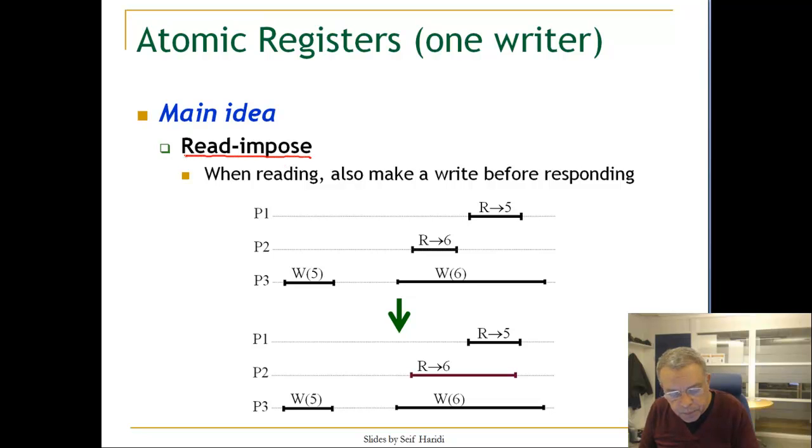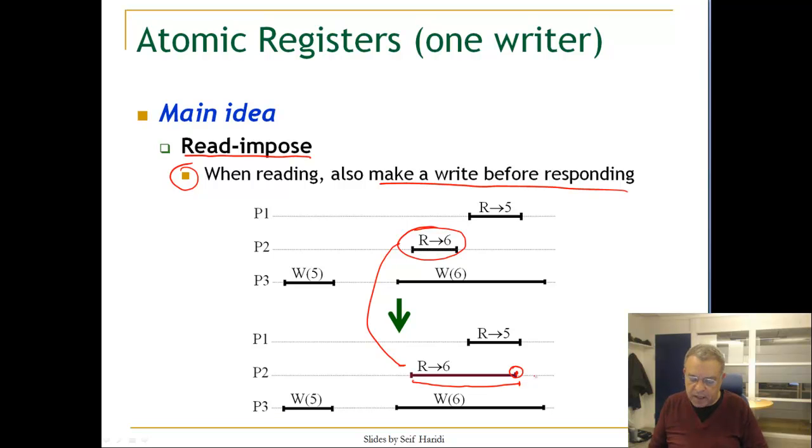The main idea of read-impose is when reading, also make a write before responding. When reading, if you happen to read the value 6, and you got it somehow, only one of the responses is 6 and the others are less, with less timestamp, then make sure that you perform a write. That extends the read operation until the write is performed. When you finish here, you know that the value has been completely written. There's another reason also for this read-impose, which is enforcing a write.